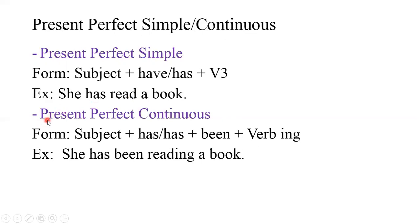Now, present perfect continuous: subject plus have/has plus been plus verb-ing. Example: 'She has been reading a book.'